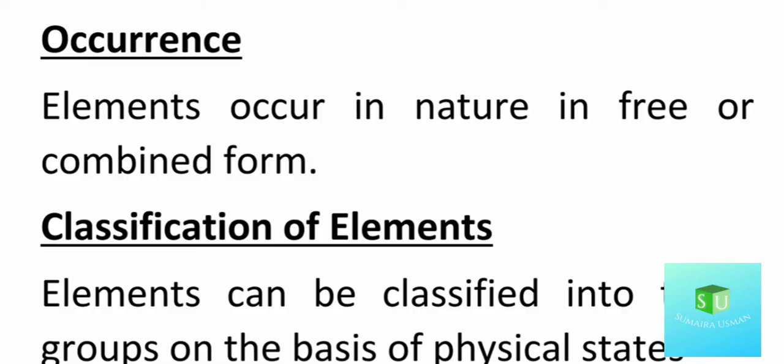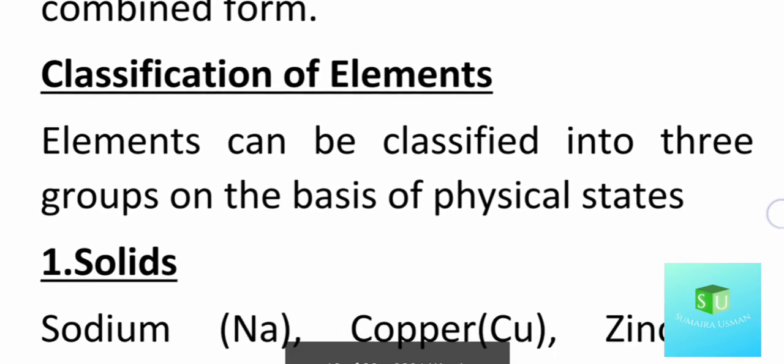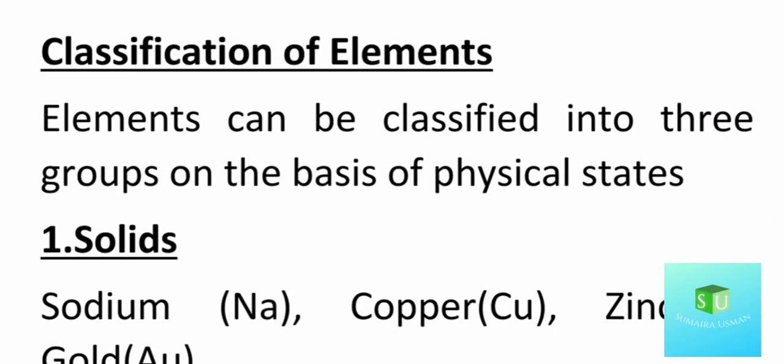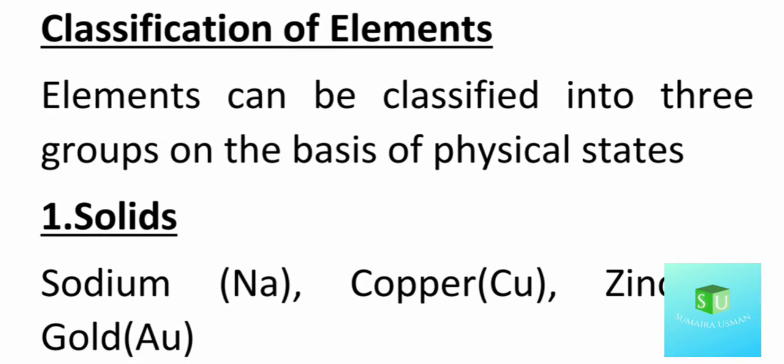Elements occur in nature in a free or in a combined form. Some elements exist in free form, while others exist in a combined form. Classification of elements on the basis of physical states — if you classify by physical state, there are three types.